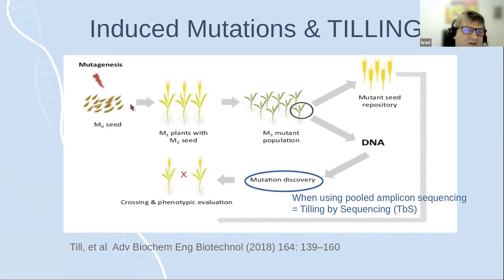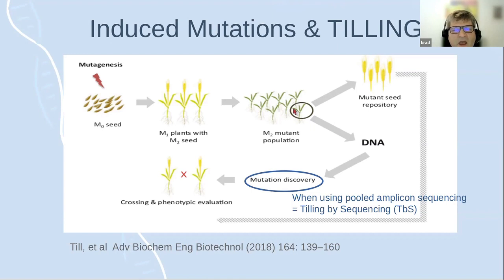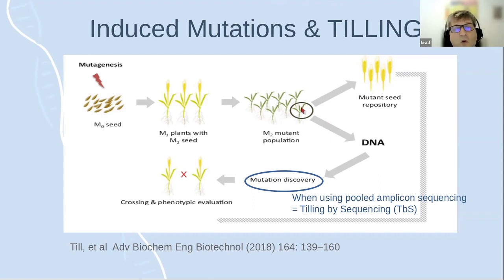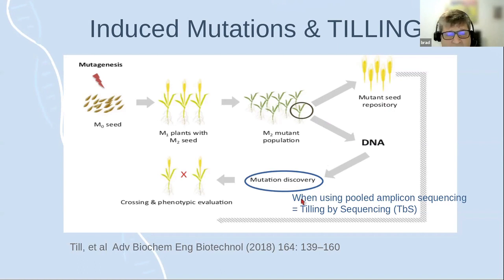In TILLING, we mutagenize seed and make single-seed-descent immortalized lines from a single plant. DNA is taken from each line and seeds stored, creating libraries you can screen at your leisure. If you have a high enough mutation density in enough plants, you can guarantee multiple mutations in any gene in the genome. We pool genomic DNAs, do PCR, and sequence those PCR products using Illumina sequencing — that's called tilling by sequencing.